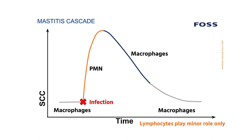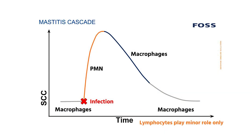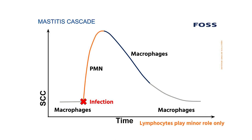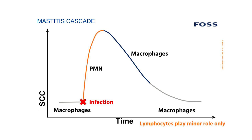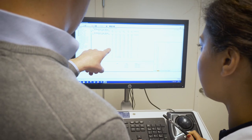As soon as an infection by bacteria occurs, the macrophages would recognize that and start recruiting cells from the bloodstream, which eventually results in an increase in total somatic cell count. At the same time, the composition of the cells changes from mainly macrophages to predominantly polymorphonuclear neutrophils.